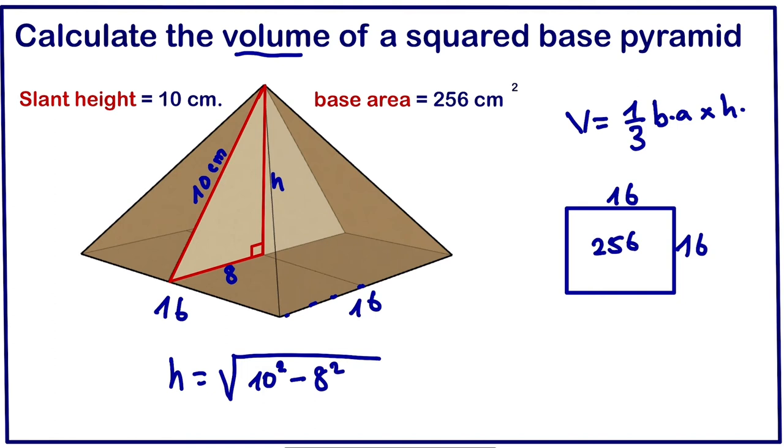So this will give us 100 minus 64. 100 minus 64 is 36. So the square root of 36 is 6. This implies the height is 6. Now that the height is 6, we can now calculate the volume of our pyramid.